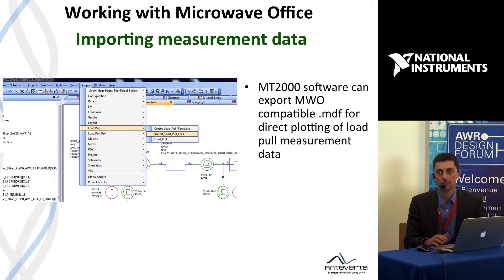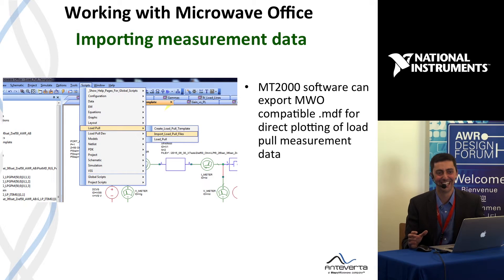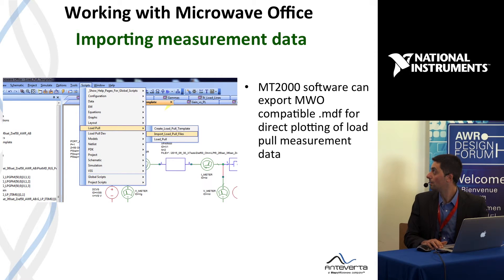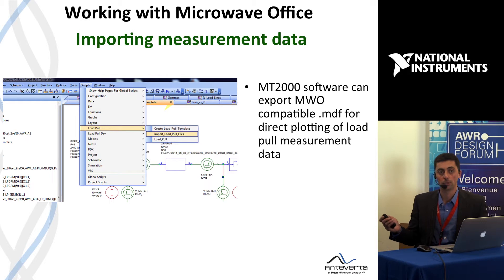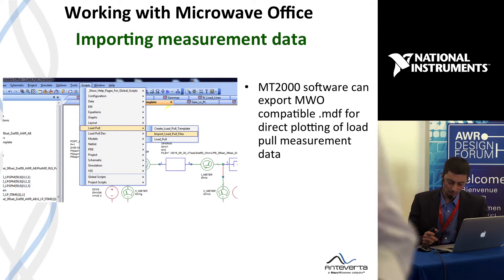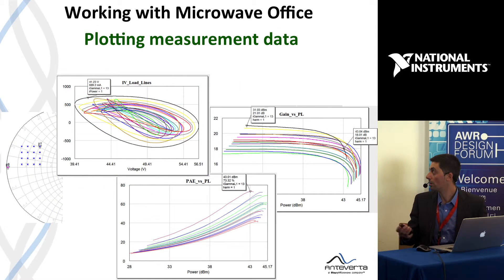We have done work in the past months integrating the measurement outputs from our measurement system and the XMP model files with Microwave Office. First, with Microwave Office you can now very simply import the measurement data to look at your measurements. You do this using the load-pull scripts highlighted here. Our system can export the AMB Waves generalized MD files that can then be read into Microwave Office to plot load lines, gain, power, efficiency, and so on.